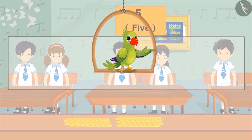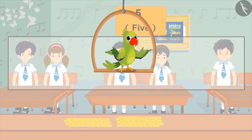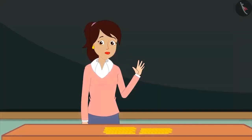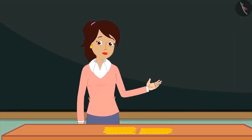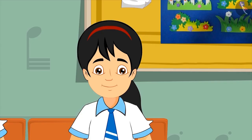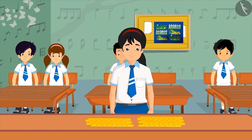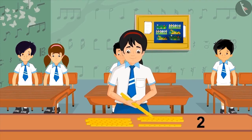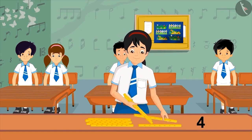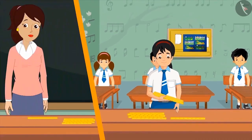Children, can you tell me how many flutes would be needed for five children? For five children, we would need five flutes. Pinky, can you bring five flutes from the table? Yes, ma'am, I will bring them. Then Pinky goes to the table and picks up five flutes one by one. One, two, three, four, five. Here you go, ma'am. I have five flutes.